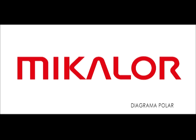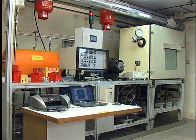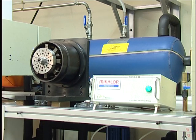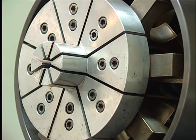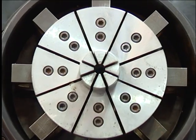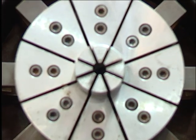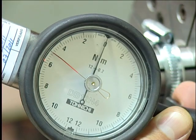We are in the R&D department of Mikalor where we are going to carry out an 8-sector clamping force comparative test between a Mikalor clamp and a standard hose clip. For this test we will use an 8-sector test rig and a torque wrench with which we apply 5 Newton meters of torque to both clamps.